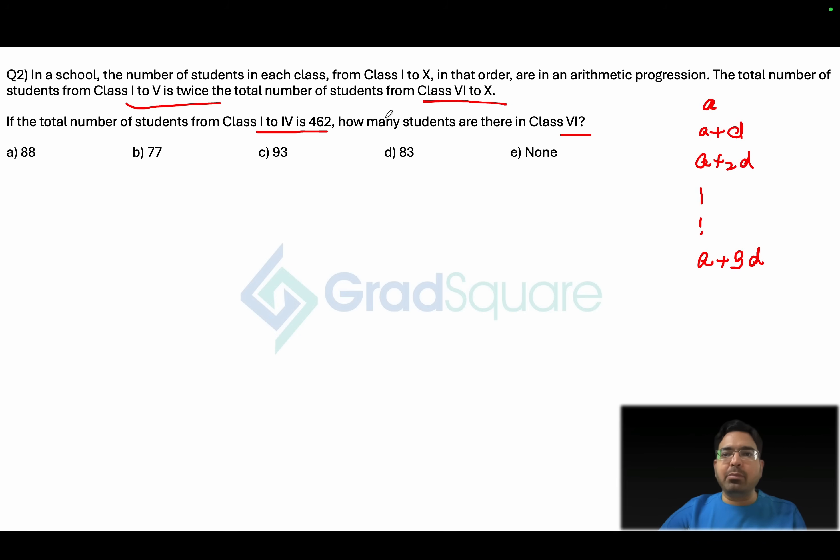Now if I am looking at the first equation it says class 1 to 5. You can always add a, a plus d, a plus 2d, a plus 3d and a plus 4d and get that sum, but I would suggest you to use the concepts a little bit more and say that for the first five terms the third term will be the average. So a plus 2d becomes the average of the first five terms. Multiply that by 5 will give you the sum of first five terms.